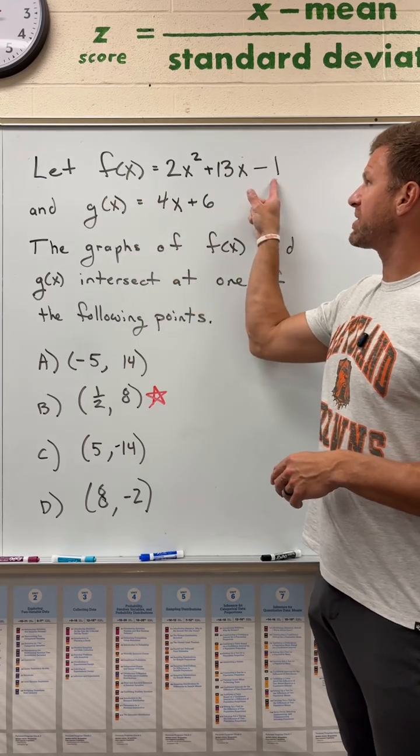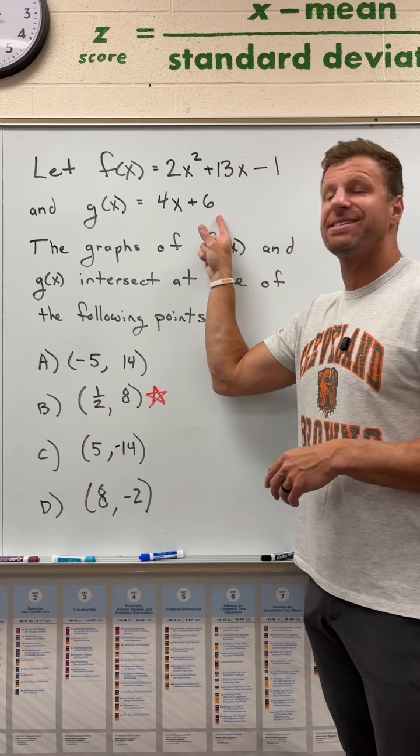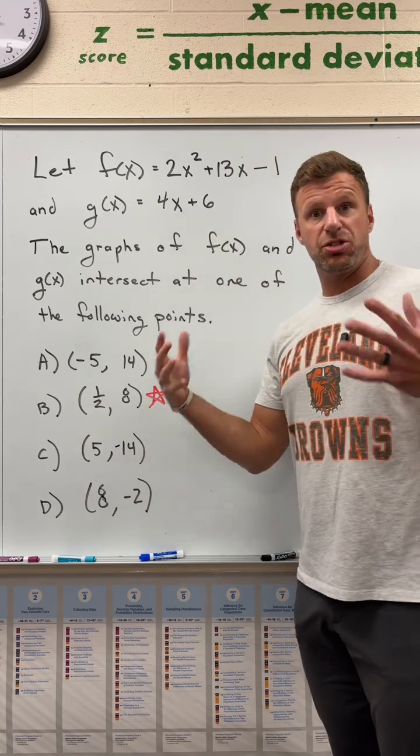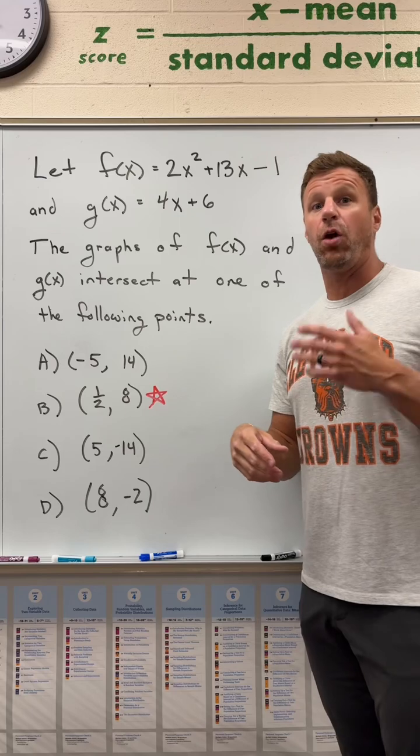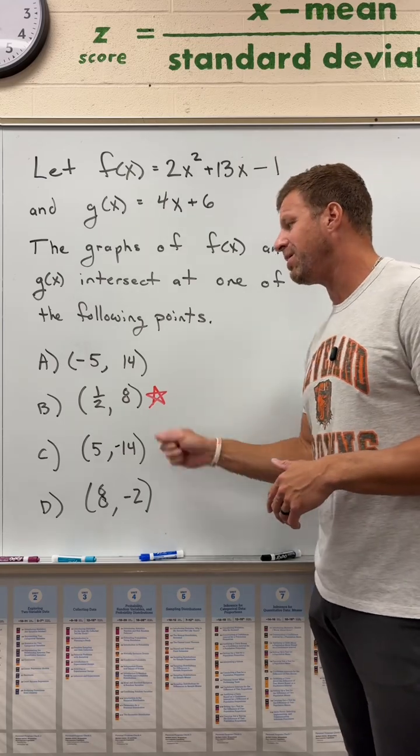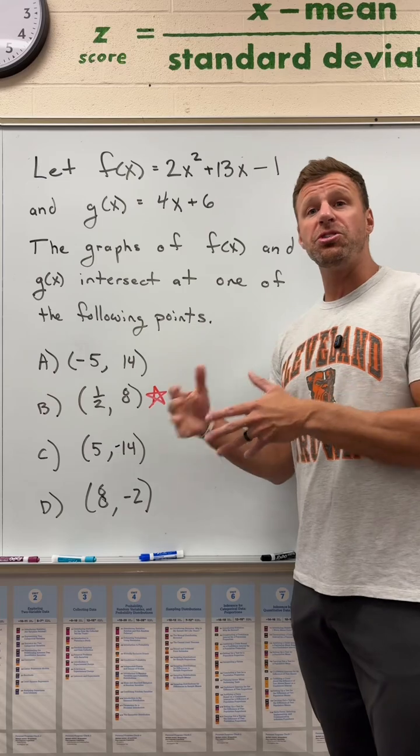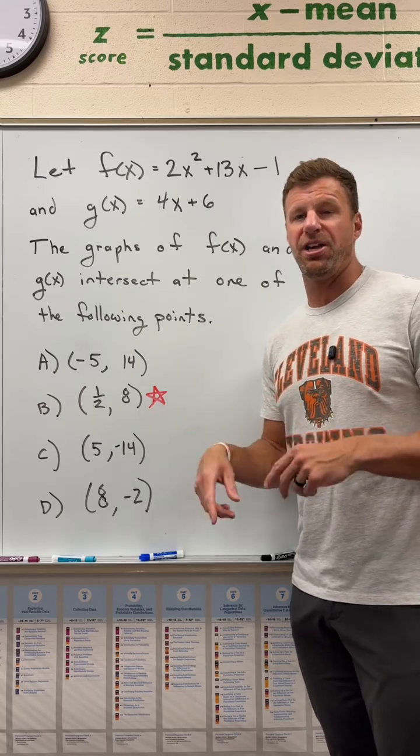All you got to do is enter in f of x exactly as you see it, enter in g of x exactly as you see it, and you will see two graphs that intersect twice. And only one of those intersection points is listed here, and that's 1 half comma 8. So using Desmos could really get you the answer pretty quickly if you know how to use it.